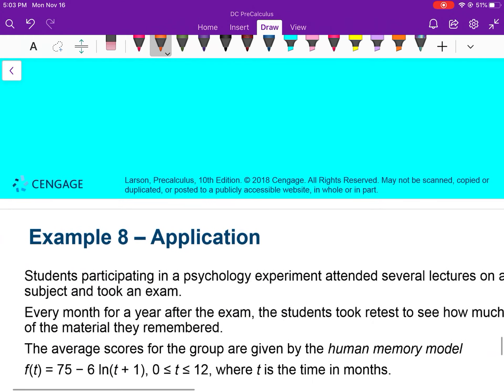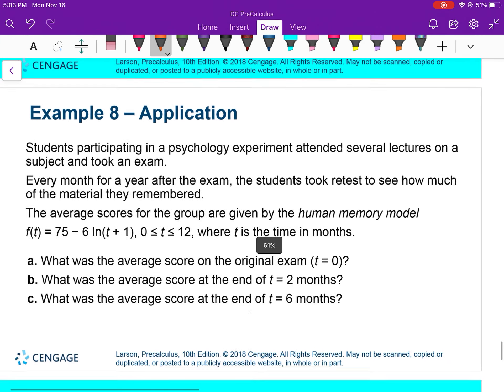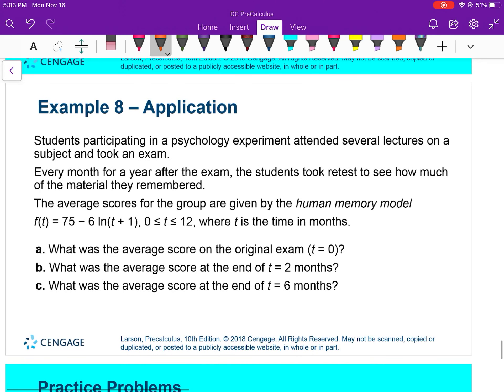So now the last part of this lesson is an application problem. I'll walk you through this one, and then you'll be done with lesson 4.2. My next video will get you started on lesson 4.3. Students participating in a psychology experiment attended several lectures on a subject and took an exam. Every month for a year after the exam, the students took a retest to see how much of the material they remembered. The average scores for the group are given by the human memory model, and this is it right here, where 0 to 12 represents the time in months.